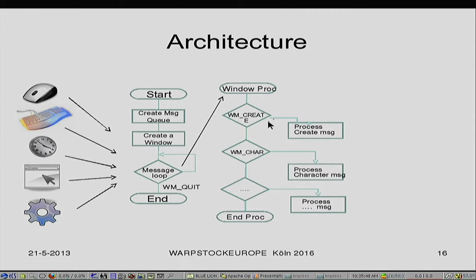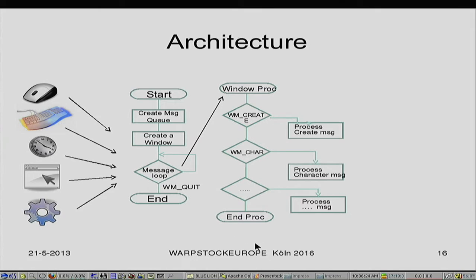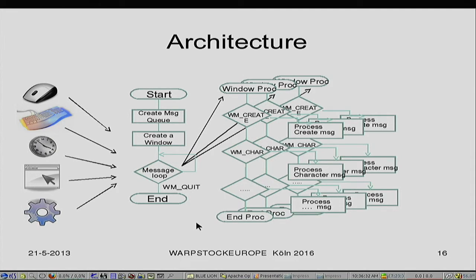For example, when we create a window we get the message WM_CREATE. We process that message — maybe we're going to set the position of the window, or make it visible, which would be the right moment to do it. Then we wait for other messages, such as a character message because the user is going to press the keyboard. When you've processed the message, you come to the end of the procedure and it waits for the next message. Often you have more procedures for different windows.